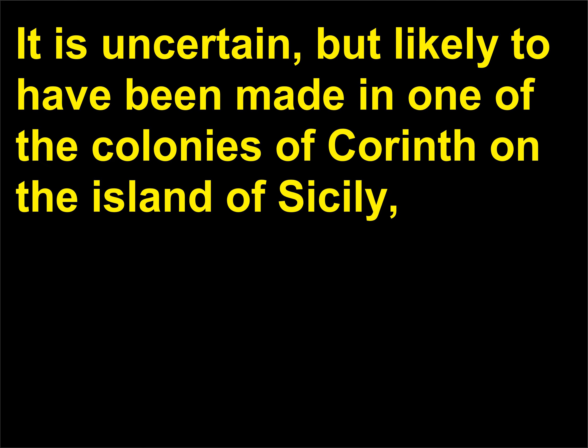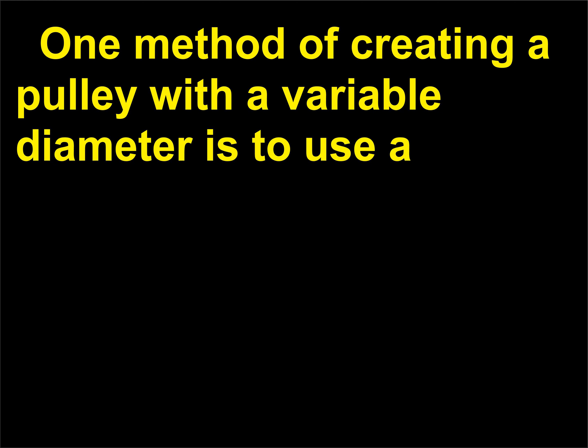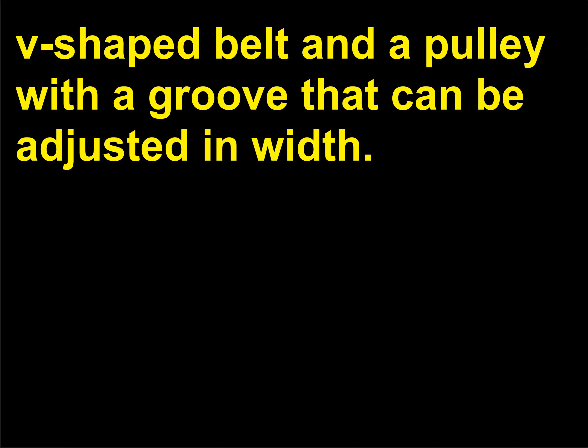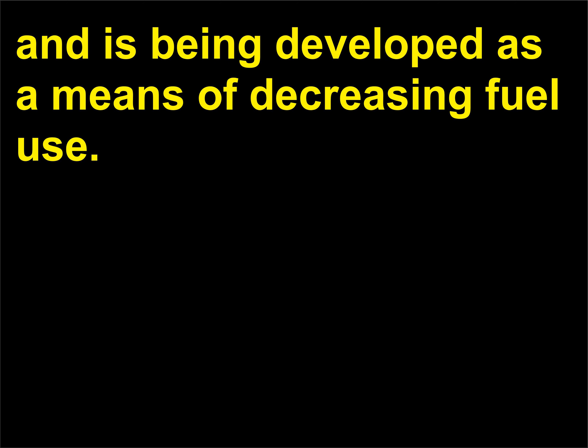The device was likely made in one of the colonies of Corinth on the island of Sicily, perhaps by a student of Archimedes decades after he was killed. One method of creating a pulley with a variable diameter is to use a V-shaped belt and a pulley with a groove that can be adjusted in width. This kind of transmission is often used with hybrid cars and is being developed as a means of decreasing fuel use.